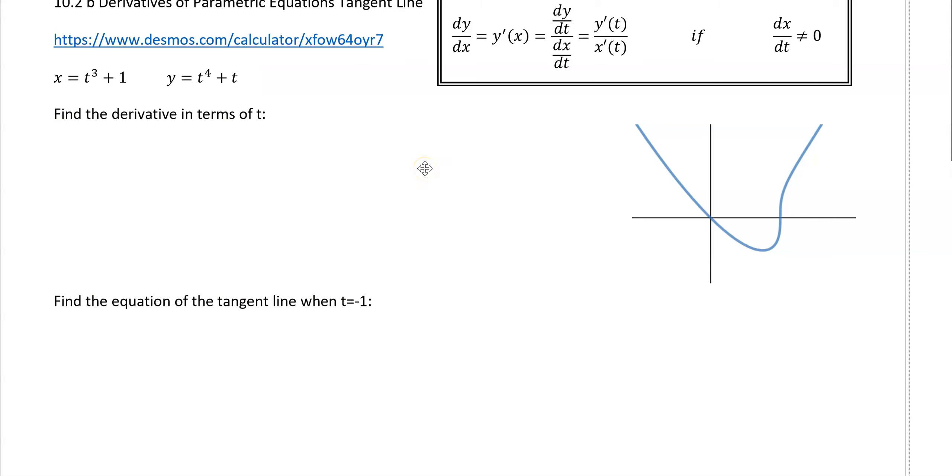So we have dx/dt, and that's 3t squared, and dy/dt, which is 4t cubed plus 1. So that means our dy/dx is going to be 4t cubed plus 1 over 3t squared.